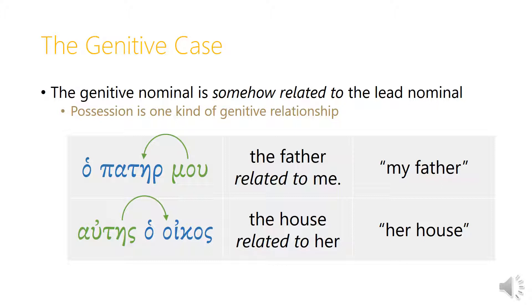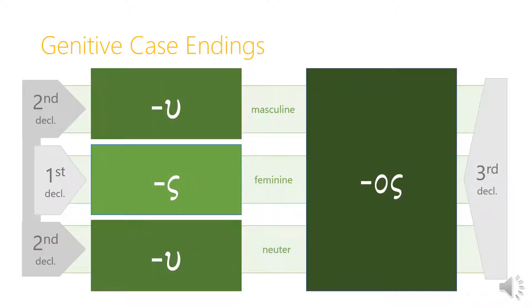Similarly, autes ha-oikos — autes is genitive and it modifies oikos — and that tells us that the house, ha-oikos, is somehow related to her. It's her house. What are the genitive case endings? We've already seen quite a bit of this with what we called the possessive pronouns. In the second declension, the masculine and neuter endings are the same, and they're just an upsilon.